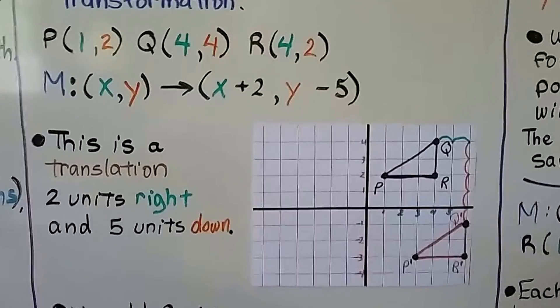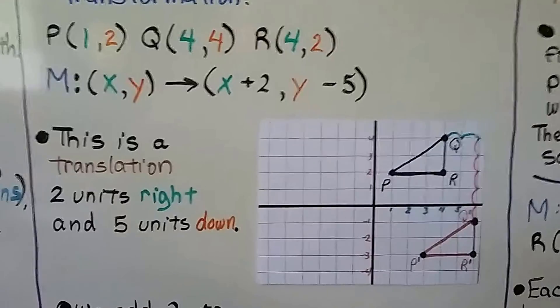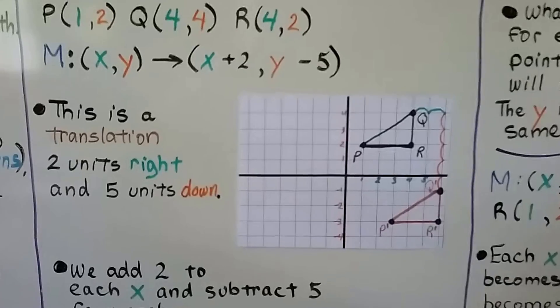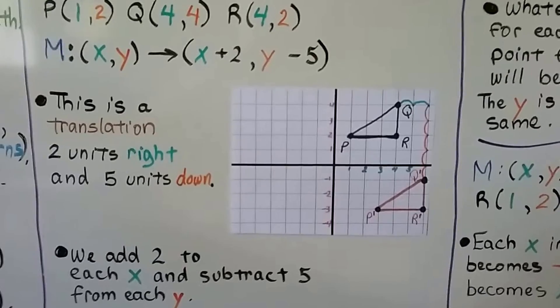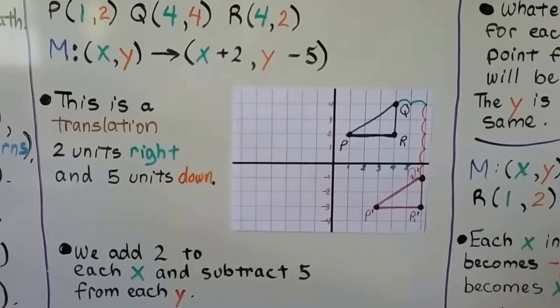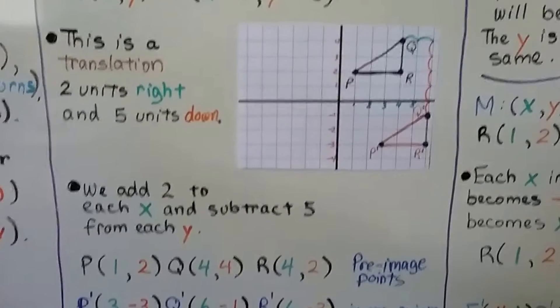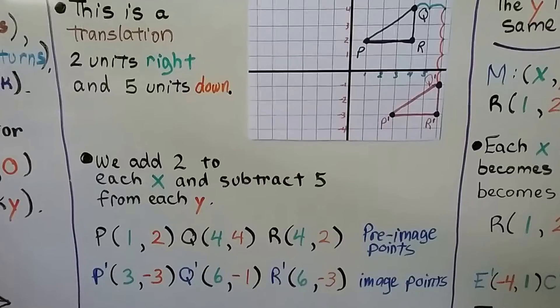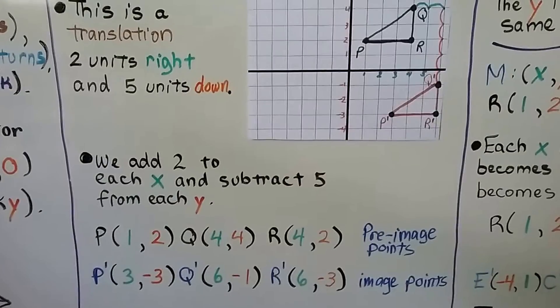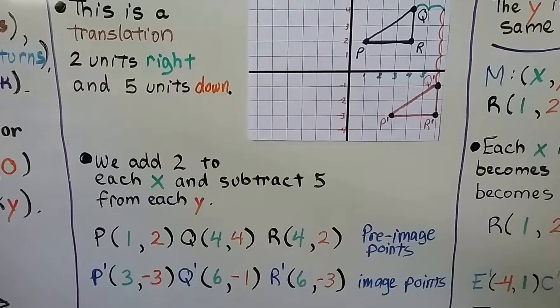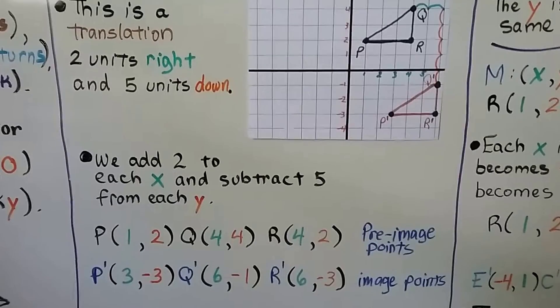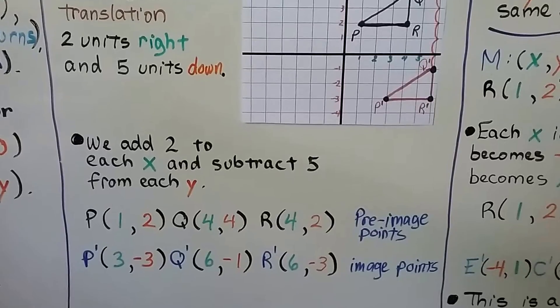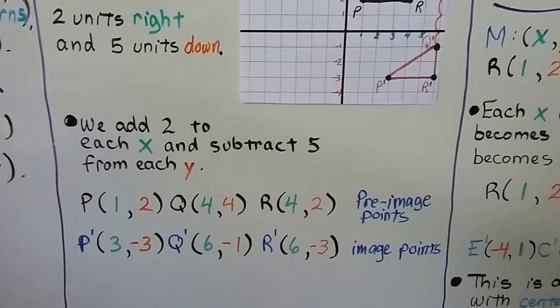So this is a translation. Two units right and five units down. Every x value, we're going to add 2 to each of them and subtract 5 from each y. So, if for P we had a 1 for x and a 2 for y, if we add 2 to x, it's going to become a 3 for P'.